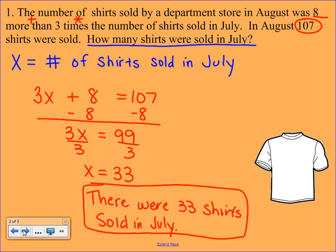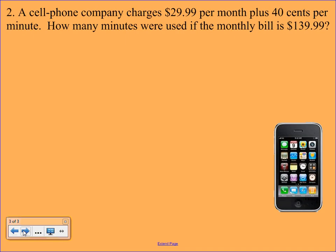Okay. Let's try another example. Here we're going to look at a cell phone company that charges $29.99 per month plus $0.40 per minute. How many minutes were used if the monthly bill is $139.99?